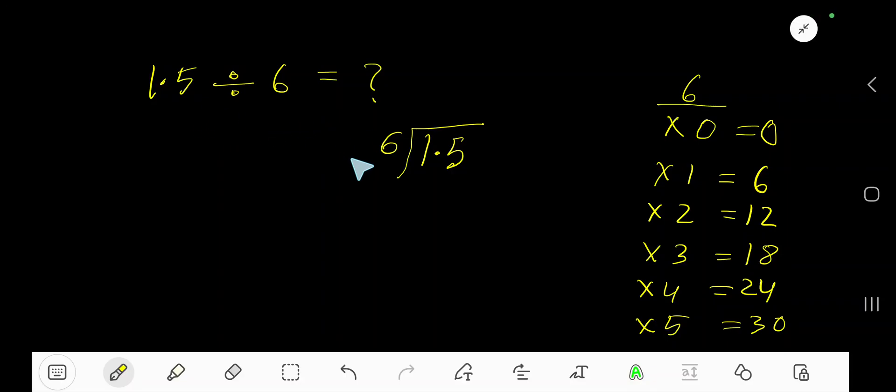1.5 divided by 6. Yes, 6 is a divisor, so we need the multiplication table of 6. 6 times 0 is 0, 6 times 1 is 6, 6 times 2 is 12, 6 times 3 is 18, 6 times 4 is 24.